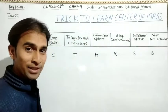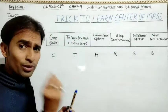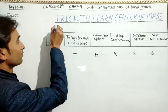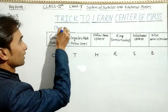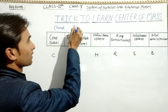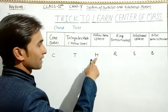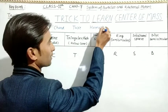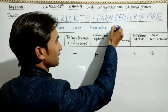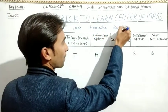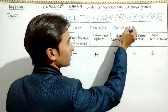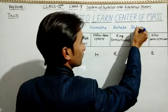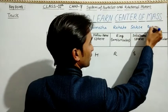Okay, so how do you remember it? It is very easy. See, C ka matlab hota hai Chand. T ka matlab hota hai Tare. Chand, Tare. H ka matlab hota hai Hamesha. R ka matlab hota hai Rehti.